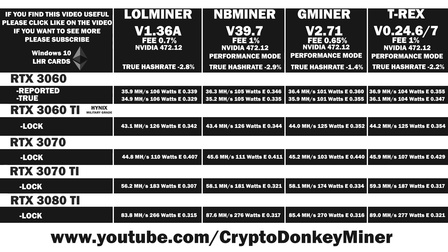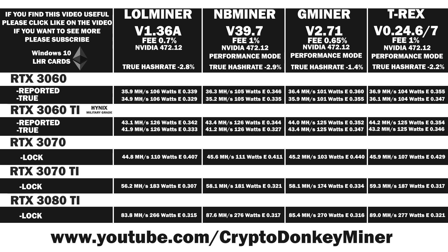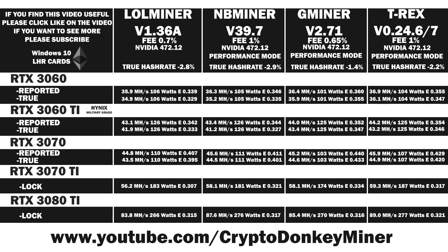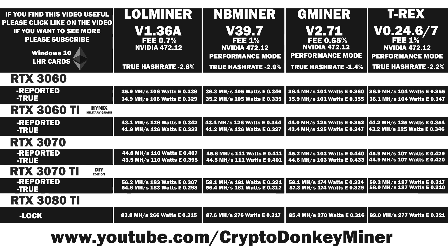Now let's have a look at the RTX 3060 Ti. The big change here is that G Miner is now both the most efficient and the fastest of them all. Moving on to the RTX 3070 — T-Rex maintains the performance crown while G Miner maintains the efficiency crown. For the RTX 3070 Ti, T-Rex maintains the performance crown while G Miner maintains the efficiency crown, yet again.